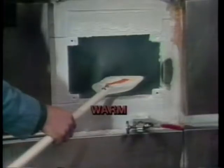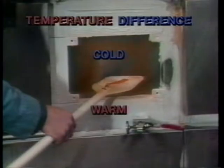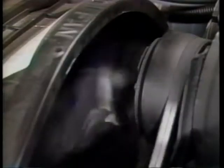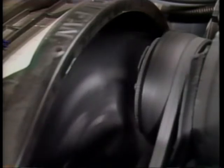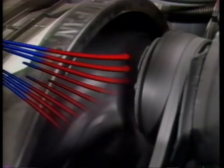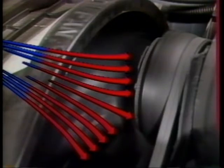Now let's look at thermal systems. Heat is moved by temperature difference. When the temperature difference between the hot and cold areas is constant, the heat will flow at a constant rate, such as calories per second. This state of equilibrium is how a radiator works — the heat flowing into the system from the engine is the same as the heat flowing out through the air.